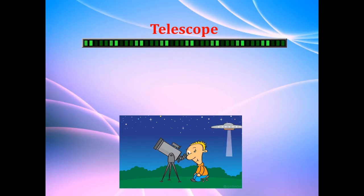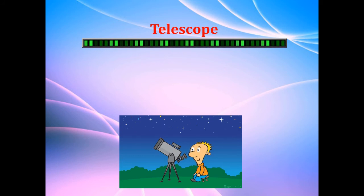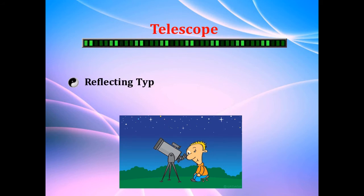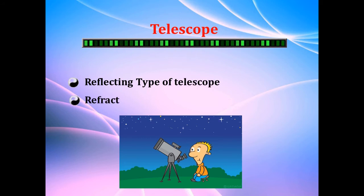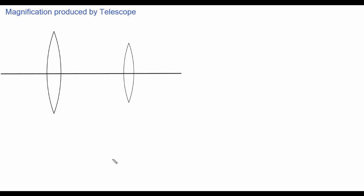A telescope is defined as an optical instrument used to observe distant objects. There are many types of telescopes, and two types are mentioned in your syllabus: the reflecting type, where mirrors are used, and the refracting type, where lenses are used. Let's discuss the magnification produced by the refracting type of telescope.